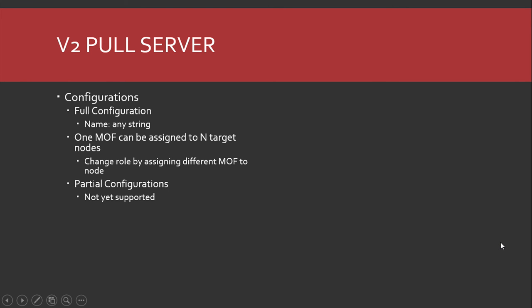Jumping back to slides — in V2 we've done a number of improvements. How many of you played with the pull server in WMF5? From the configuration perspective, full configuration can be any string — you name a configuration however you want, and you have a way of saying this node gets this configuration. It's much simpler. You don't have to use GUIDs. You can change a rule on your configurations by going to the pull server and saying this node now gets this configuration, giving you a central place to manage assignments.